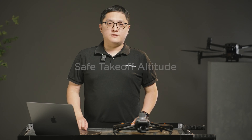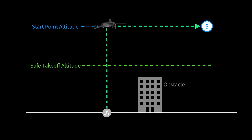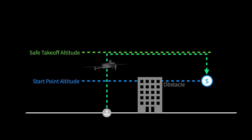Safe takeoff altitude: the safe takeoff altitude should be higher than any obstacles between the takeoff point and the first waypoint. If it is lower than the first waypoint, the aircraft will climb up to the altitude of the first waypoint before flying towards it. If it is higher than the first waypoint, it will reach the safe takeoff altitude first, then maintain that height while flying directly above the first waypoint, then descend.